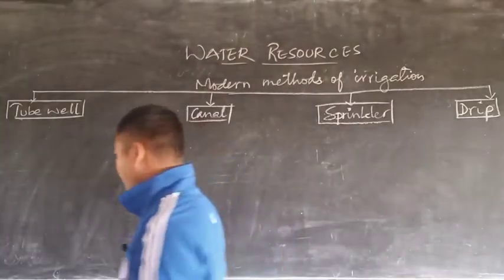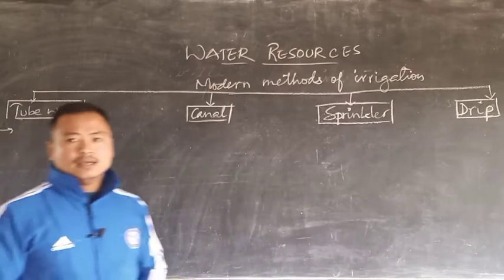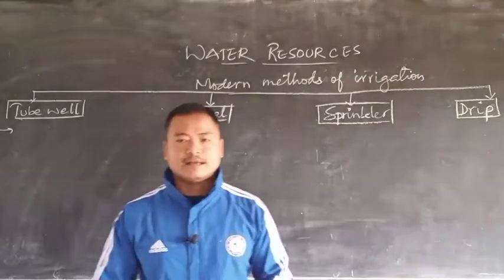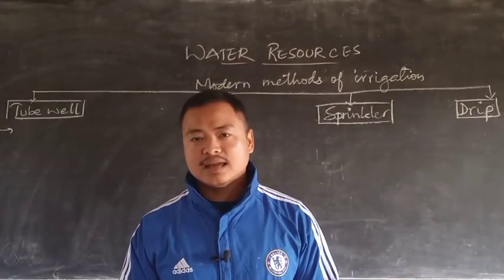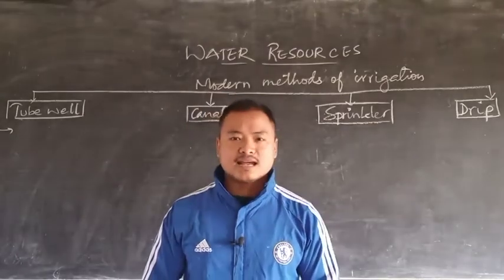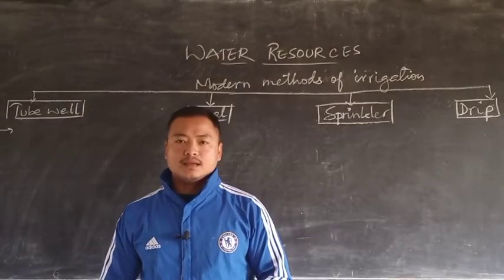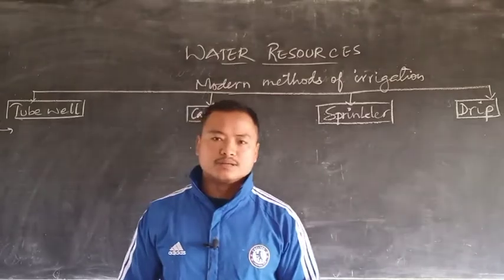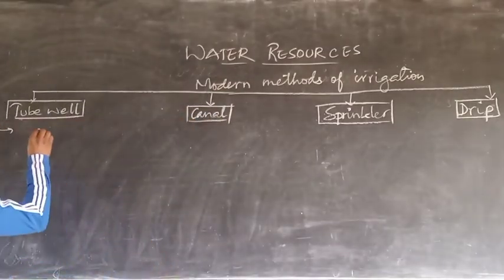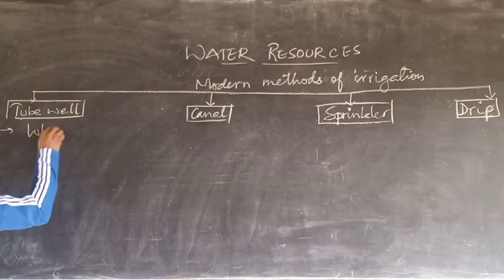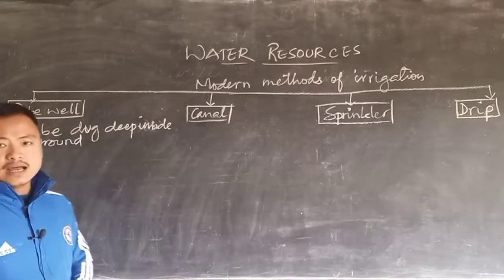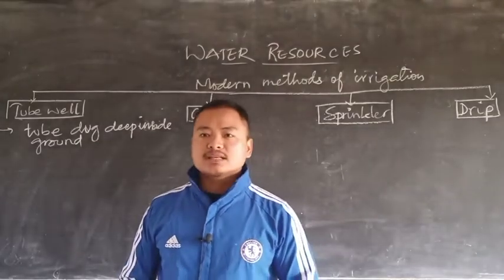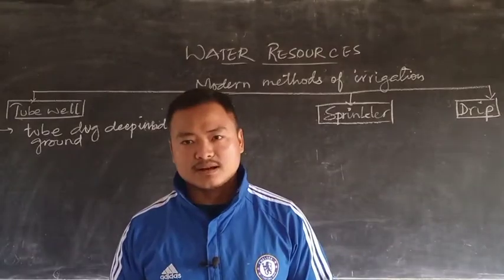Let us first talk about tube well irrigation. Last class we discussed well irrigation and found its disadvantage — the land it occupies and the water usually dries up during the time when it is required the most. To make up for that loss of land and water, we have tube well irrigation. It is similar to well irrigation, but here tubes or pipes are dug deep into the ground and underground water is extracted.